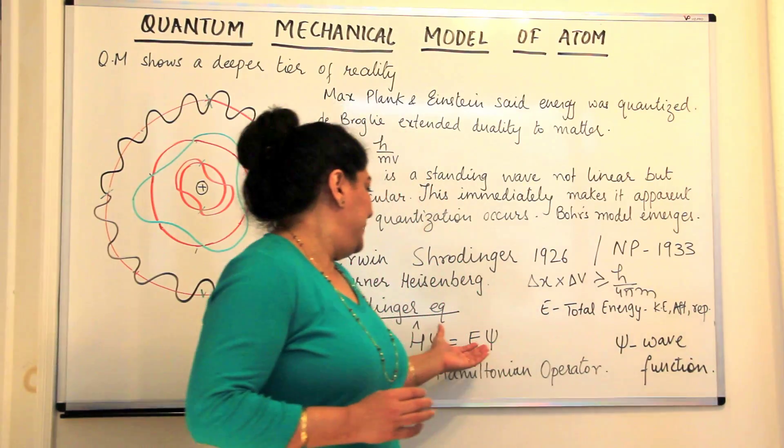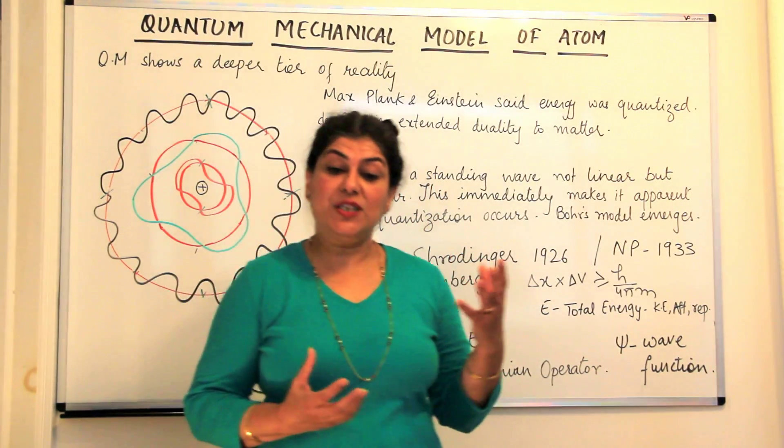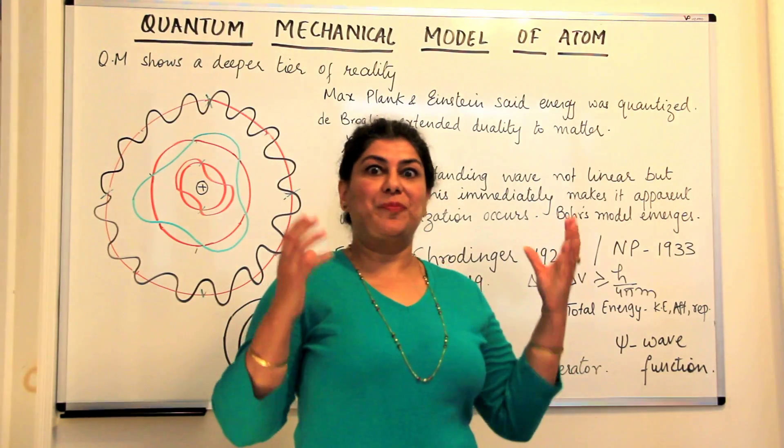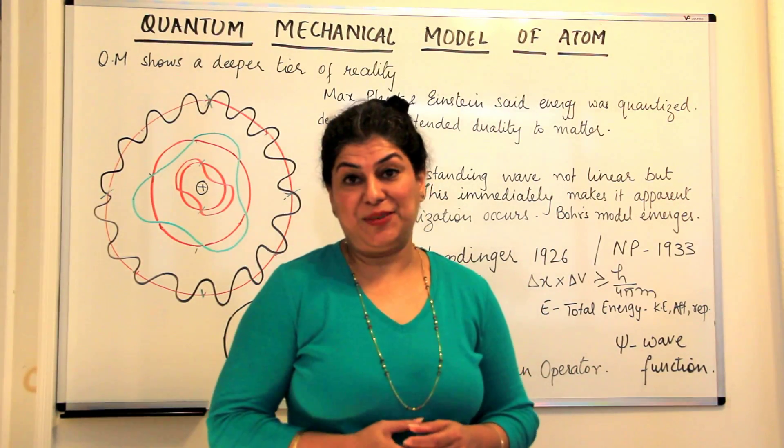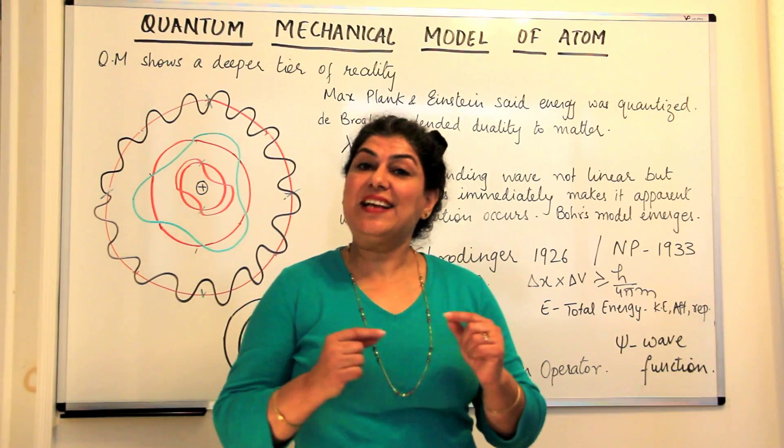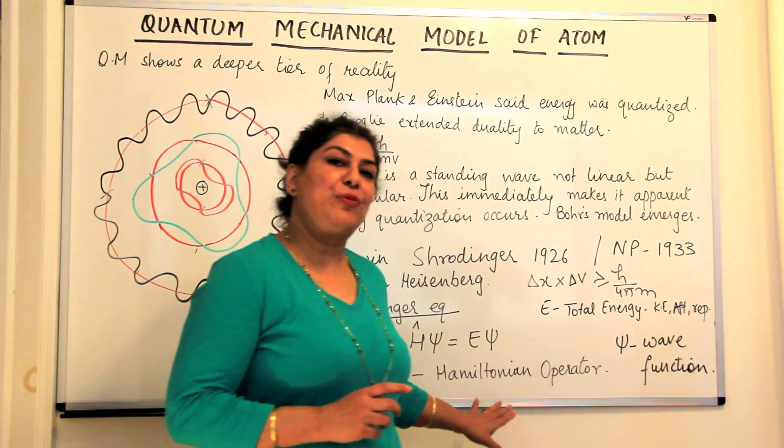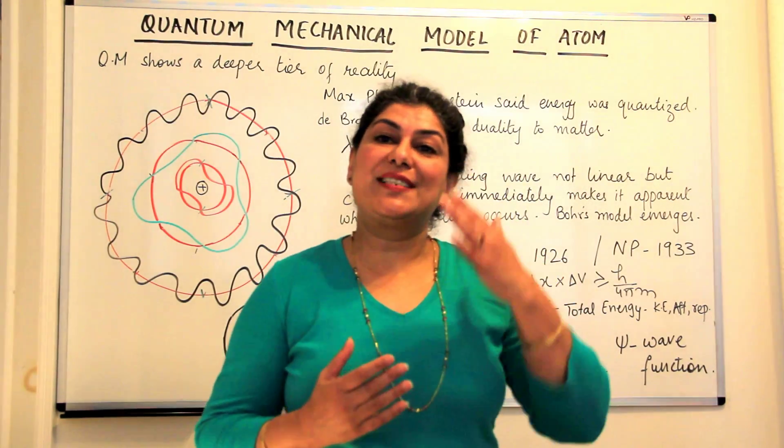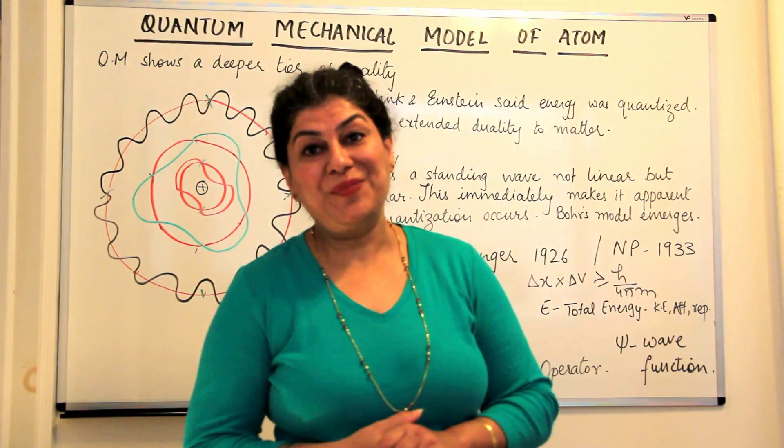So that is how the Schrödinger wave equation was used and that is how we'll be progressing with the quantum mechanical model of an atom. Now, in the next video, we are going to start off from the Schrödinger wave equation and the quantum numbers and we will study about quantum mechanics from there.